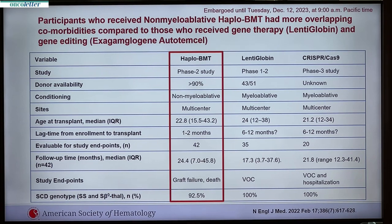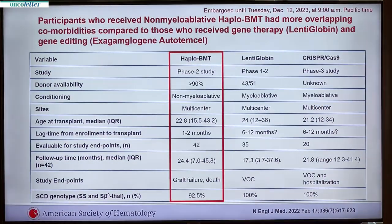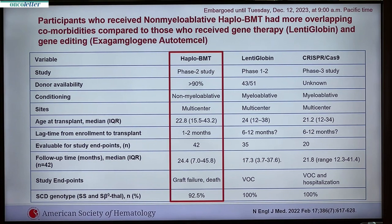Ours was a phase two study; lenti-globin was phase one to two; CRISPR was a phase three study. In haploidentical bone marrow transplant, you have more than 90 percent donor availability — siblings, parents, cousins, first, second, and third degree relatives can all be donors, so there is really an endless donor pool within the family. For lenti-globin, despite using your own cells, only 43 out of 51 people after evaluation could actually proceed to therapy, based on data published in Blood.